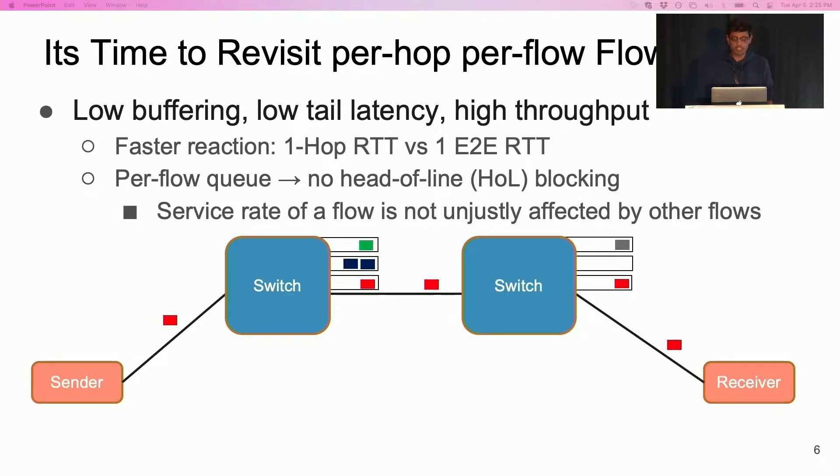In this scheme, each flow gets its own queue at the switch's egress. In addition to the sender, every switch on a flow's path can throttle the flow. This figure shows a particular flow traversing the data center network. The packets of this flow are shown in red. When the flow starts experiencing congestion, it builds up a queue at the switch.